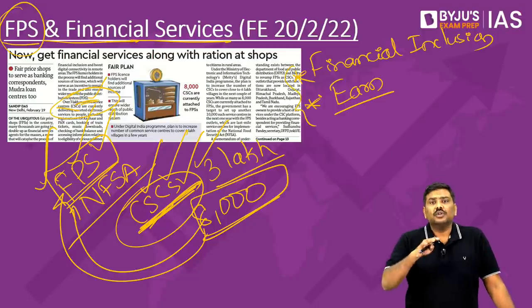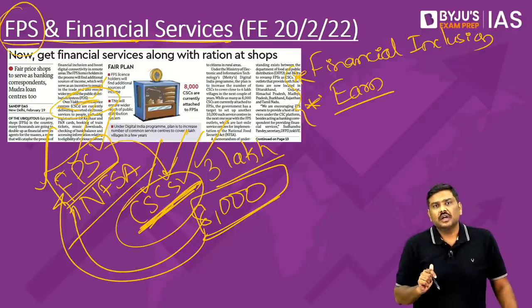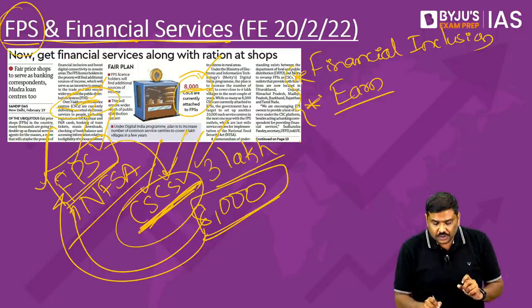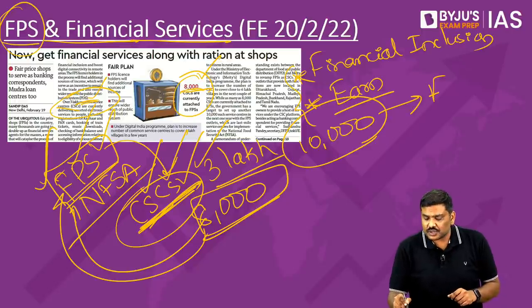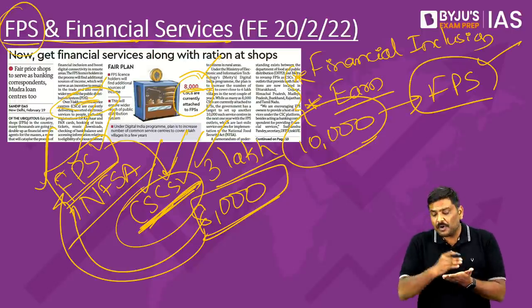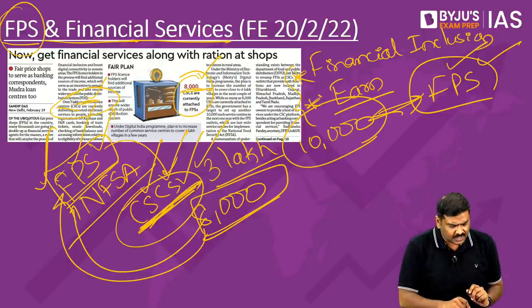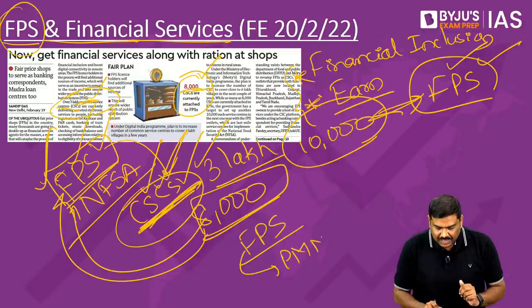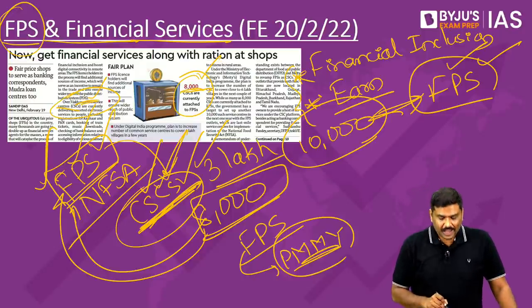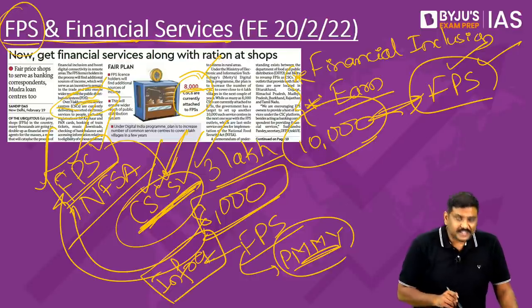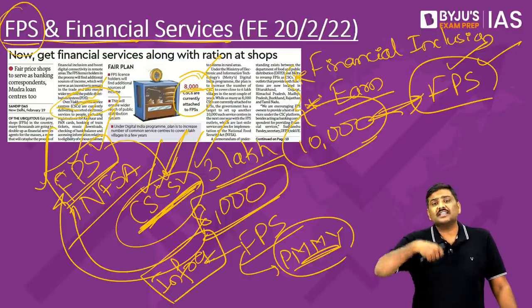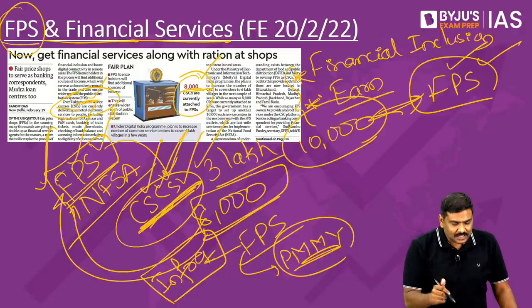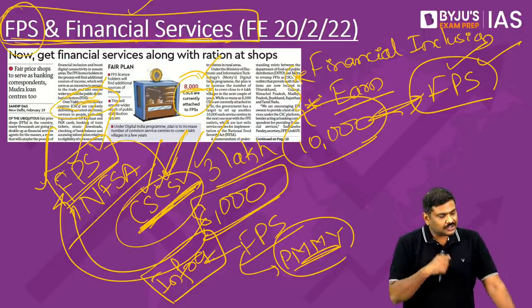In recent times, the government has stated that the existing 8,000 CSCs attached to FPS should be expanded, and in the next one year 10,000 more CSCs will be attached to FPS. Government has also identified these particular FPS under Pradhan Mantri Mudra Yojana (PMMY), wherein they can take loans, set up infrastructure, and start selling agriculture as well as non-agriculture common goods to supplement their source of income.